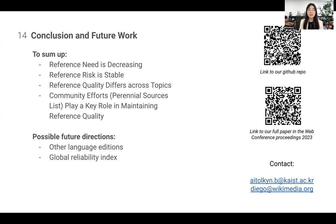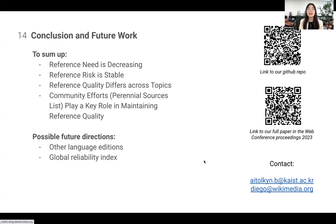Possible future directions include extending our work to other language editions and considering a Global Reliability Index, since we are currently limited to the Perennial Sources List coverage in our computation of Reference Risk score. You can refer to our full paper using the provided link, where we also show additional experiments, as well as our GitHub repository, where we share the dataset and code. We are open for further discussions and suggestions — feel free to contact us through the provided email. Thank you for listening.